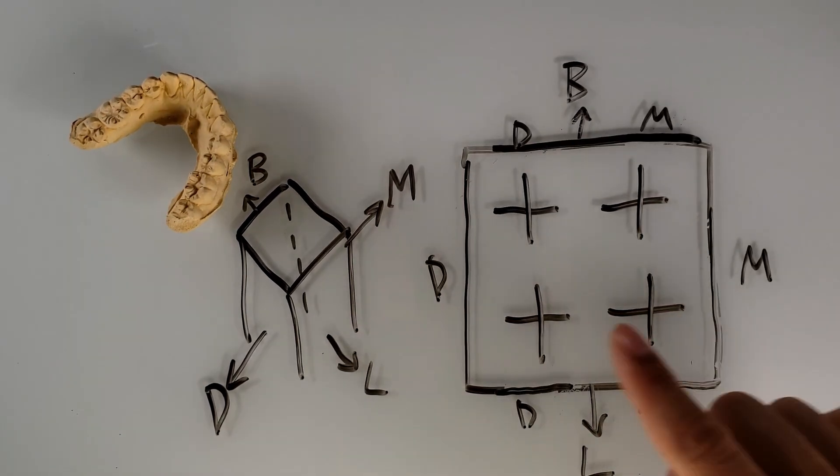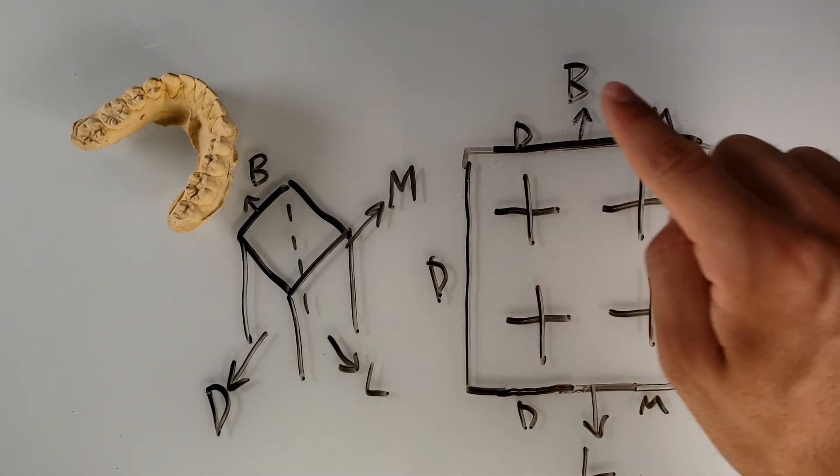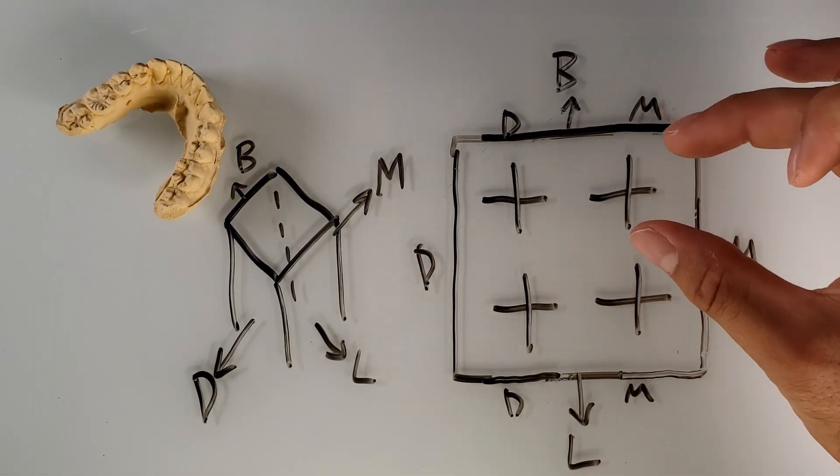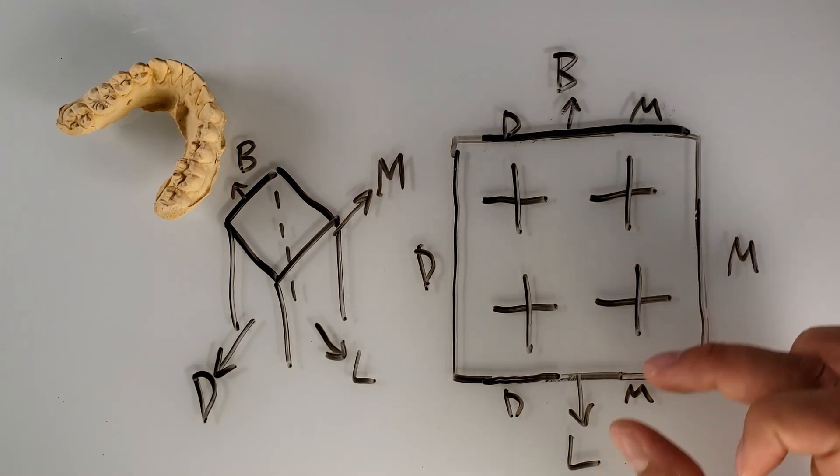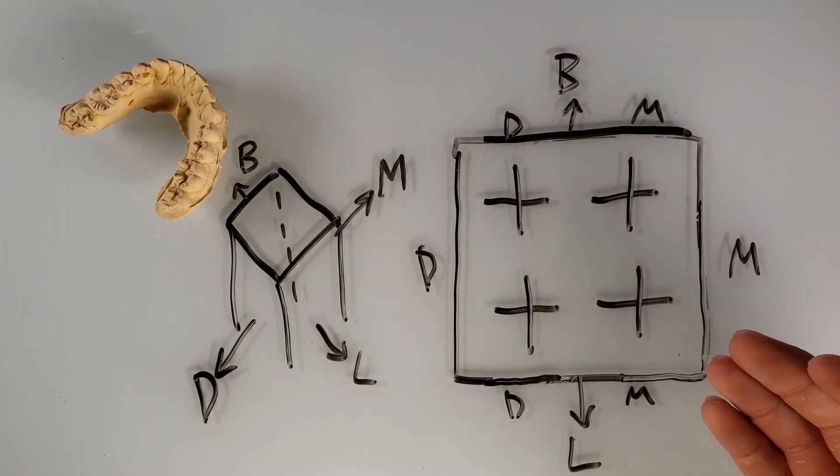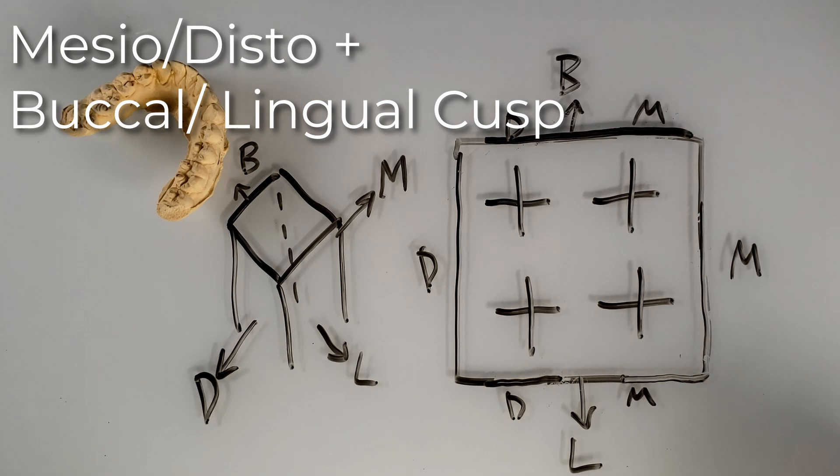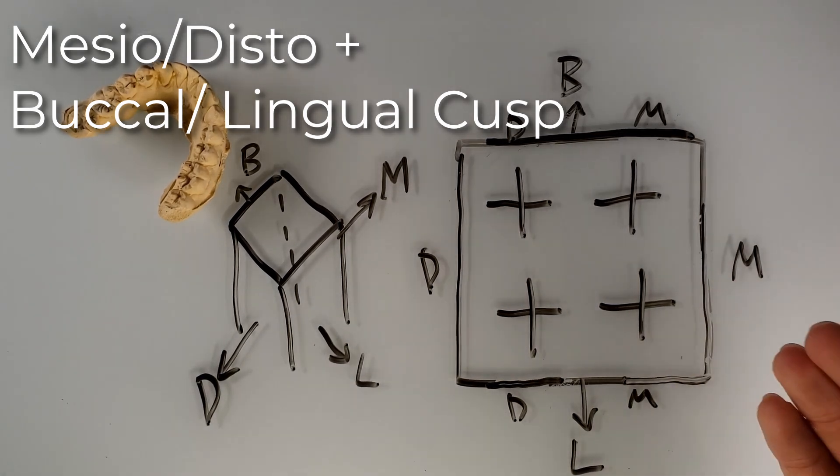All right, so what I did was I labeled mesial and distal. Now if we subdivide these cusps, there's a more mesial located cusp on the buccal. There's a more mesial located cusp on the lingual side. So again, we'd use this equation. And it would give us what cusp we're looking at.